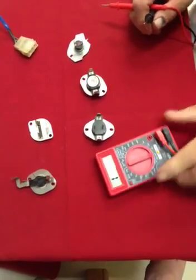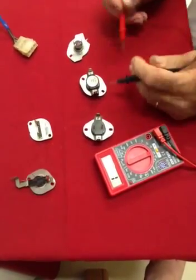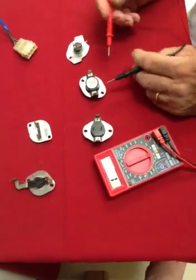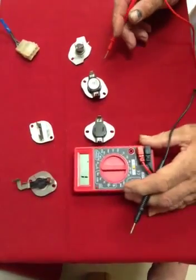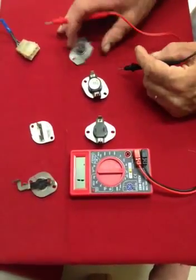We're going to be using an ohmmeter to check resistance and continuity on switches, high limits, and fuses. An ohmmeter will be used with power off, just reading.